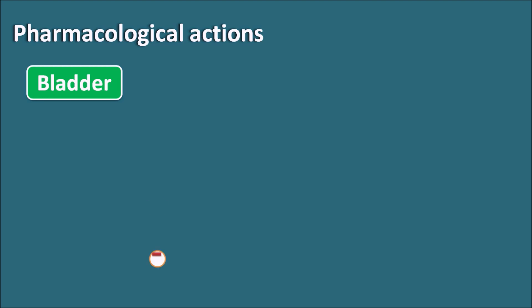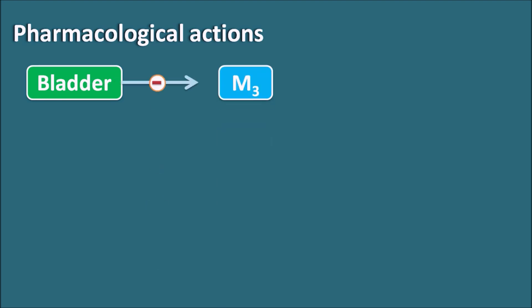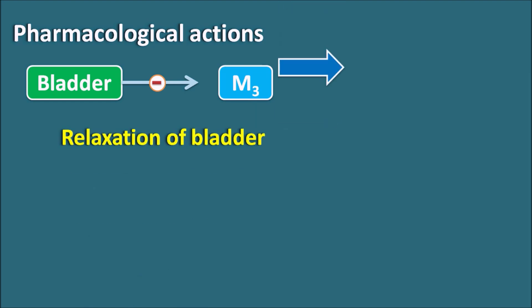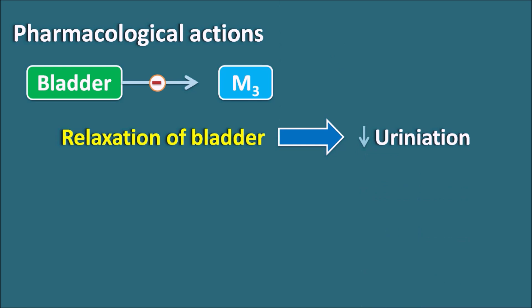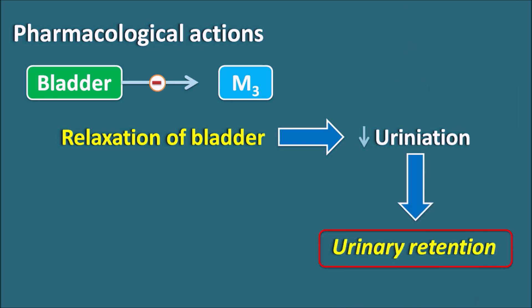Third — the bladder. The bladder is equipped with M3 receptors. Anticholinergics block the M3 receptors, producing relaxation of the bladder, resulting in decreased urination and decreased frequency of urination. That is why these drugs are used in the treatment of urinary incontinence — in patients who are unable to control urination, anticholinergics can be given as bladder relaxants. Since they decrease urination, they can produce urinary retention as a side effect.